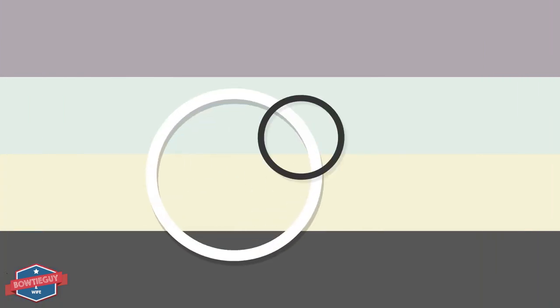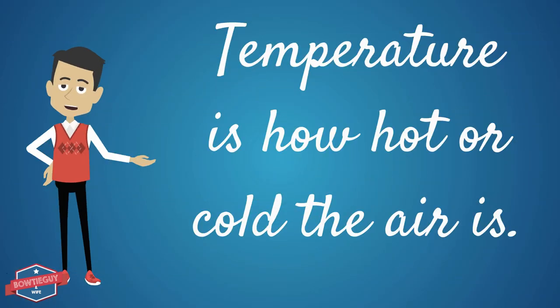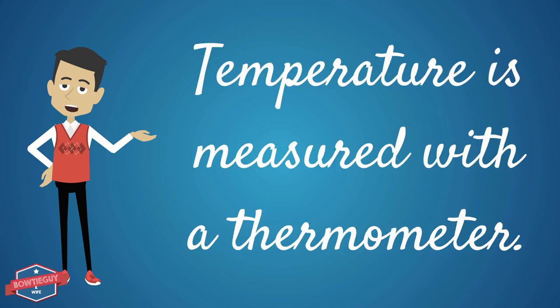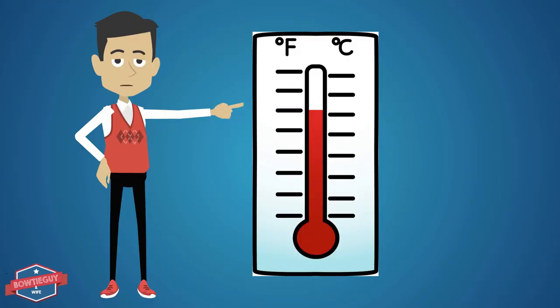What is temperature? Temperature is how hot or cold the air is. How is temperature measured? Temperature is measured with a thermometer. As you can see here, a thermometer looks like this. A thermometer is sometimes filled with alcohol or it can be filled with mercury, and it's measured in degrees Celsius or degrees Fahrenheit.